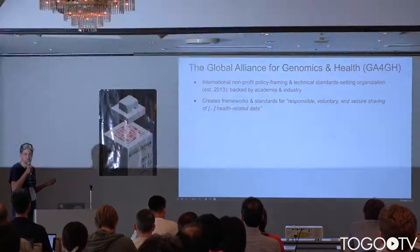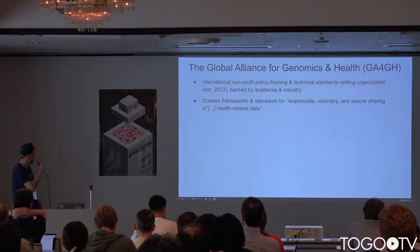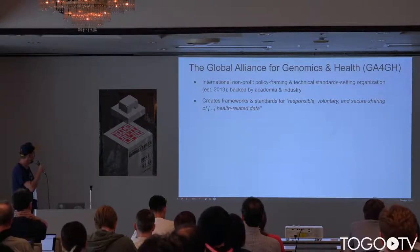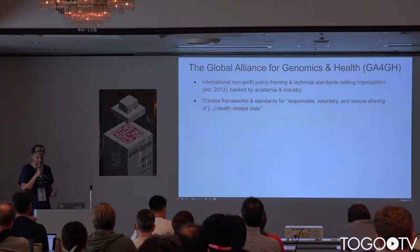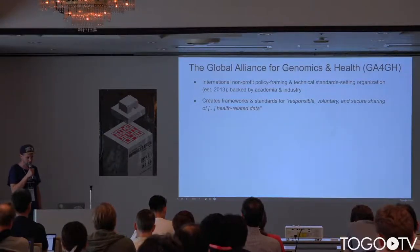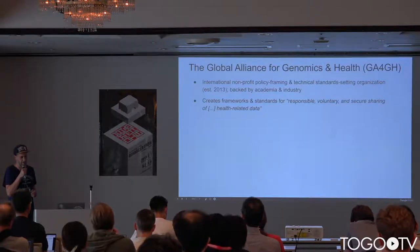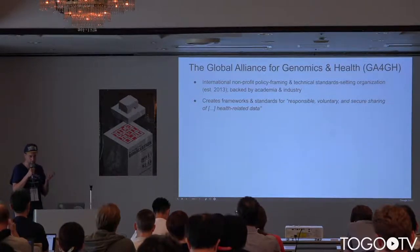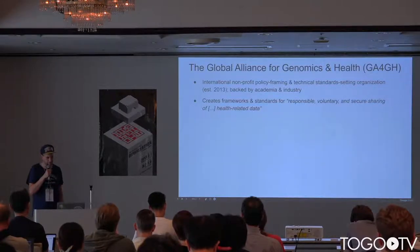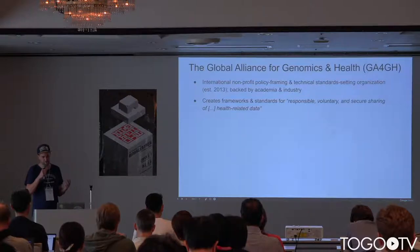I have to introduce the Global Alliance for Genomics and Health, GA4GH. It's an international non-profit policy framing and technical standard setting organization established in 2013. It's heavily backed by academia and industry such as NIH, Ensembl, Google, Seven Bridges, and Illumina are all contributing.